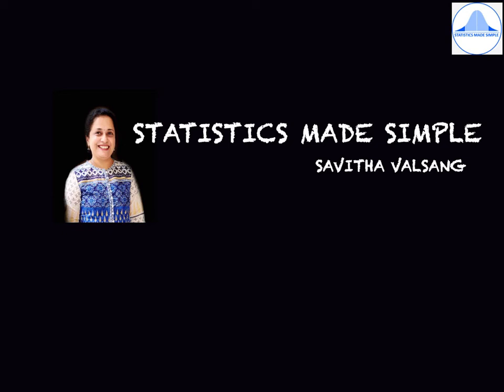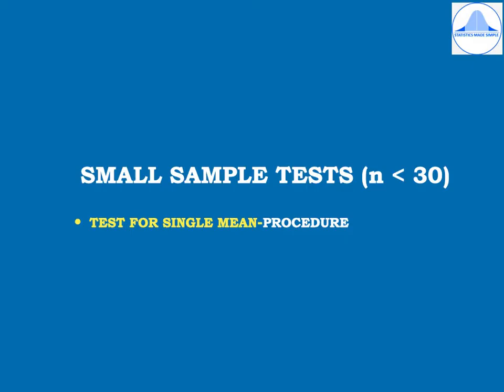You are watching Statistics Made Simple and I am Savita Valsang. The last topic under testing of hypothesis chapter are the small sample tests. Here the sample size n will be less than 30. I am explaining the procedure for test for single mean.